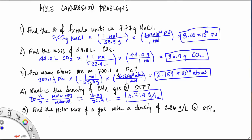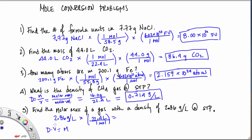In number five, we're finding the molar mass of a gas. We know the density is 2.86 grams per liter at standard temperature and pressure. Density times volume equals mass, so we multiply 2.86 by the molar volume of 22.4 liters in one mole. The calculation gives 64.1 grams per mole as the molar mass.